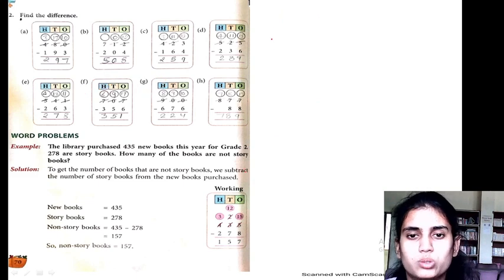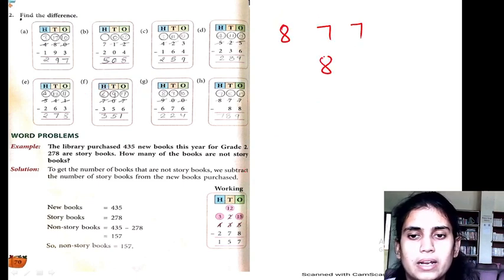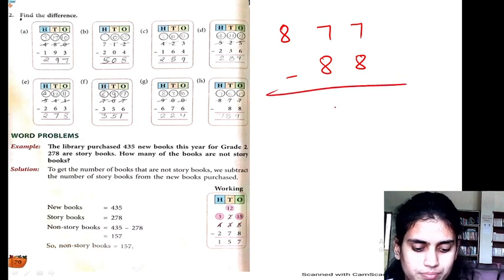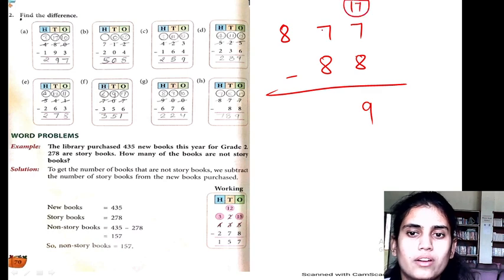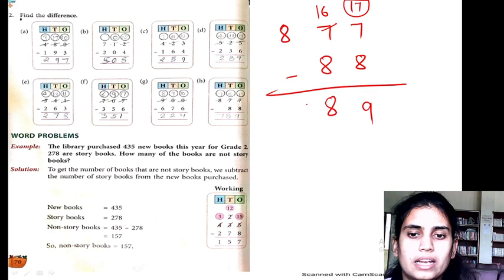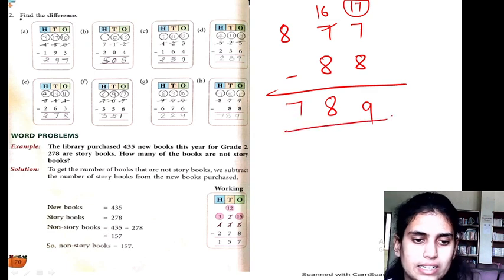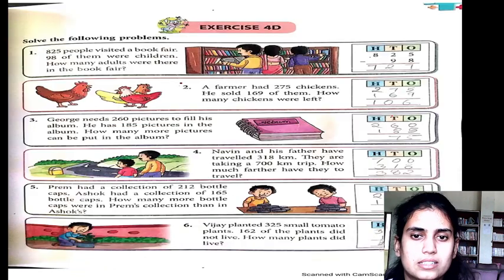It is H part: 877 minus 88. 17 minus 8 is 9. Now we have 16, and 16 minus 8 is 8. Here is 7. So 789 is my answer.